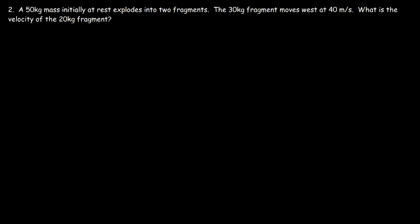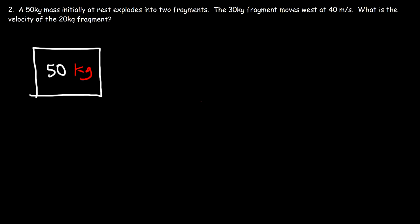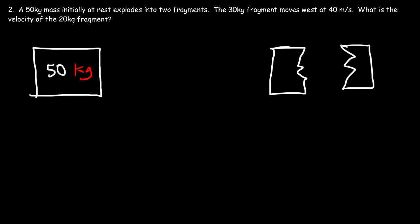Here's another similar problem: a 50 kilogram mass initially at rest explodes into two fragments. This is the 50 kg object. After some time it explodes into two parts — fragment one and fragment two. The 30 kg fragment moves west at 40 meters per second.